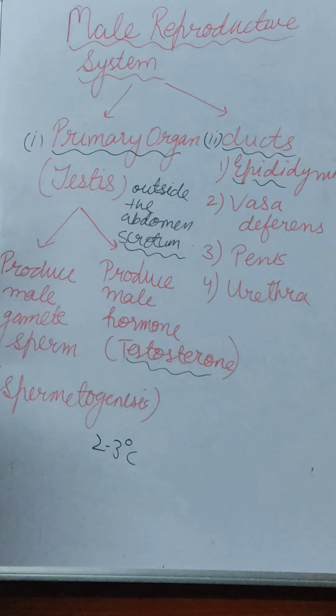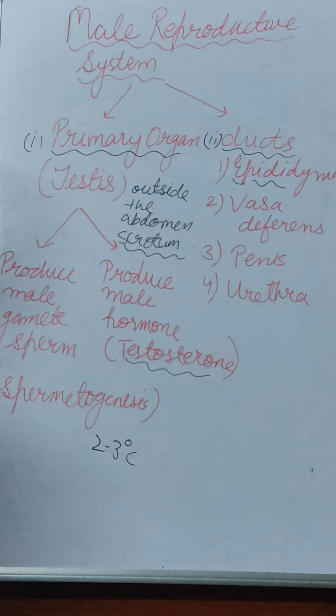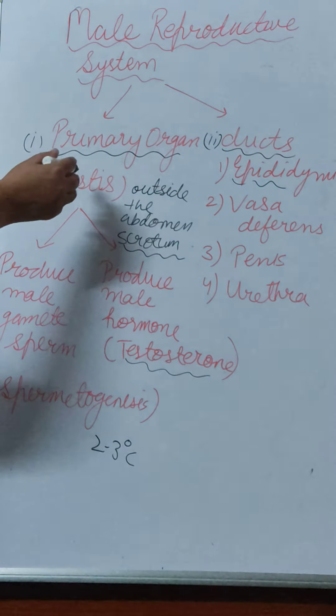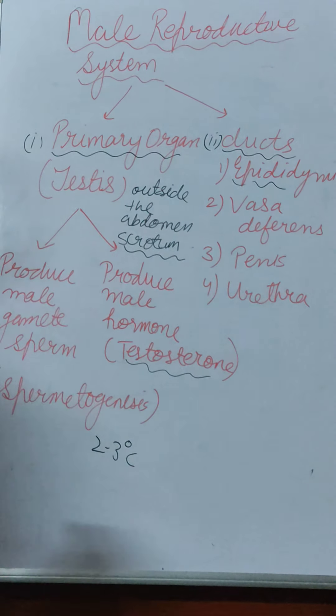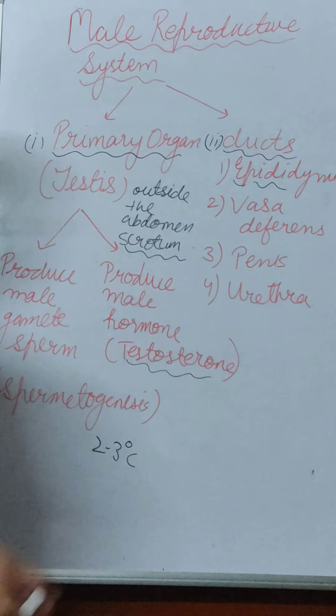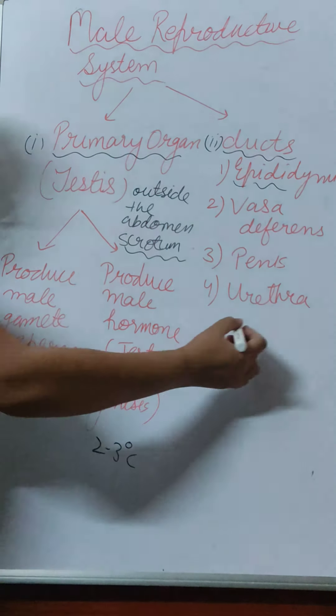The next duct is the vas deferens. It is paired and is a long tube that carries the sperm from the testes to the urethra. The urethra is the duct through which urine passes out. In males, the passage of urine and the passage of sperm both occur through the common duct — the urethra.